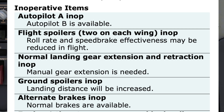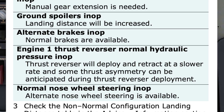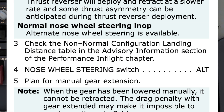Inoperative items: Autopilot A inoperative — autopilot B is available. Flight spoilers, 2 on each wing, inoperative — roll rate and speed brake effectiveness may be reduced in flight. Normal landing gear extension and retraction inoperative — manual gear extension is needed. Ground spoilers inoperative — landing distance will be increased. Alternate brakes inoperative — normal brakes are available. Engine 1 thrust reverser normal hydraulic pressure inoperative — thrust reverser will deploy and retract at a slower rate and some thrust asymmetry can be anticipated during thrust reverser deployment. Normal nose wheel steering inoperative — alternate nose wheel steering is available.